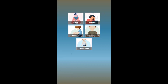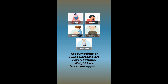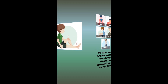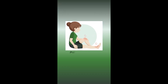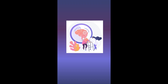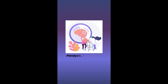The symptoms of Ewing sarcoma are fever, fatigue, weight loss, decreased appetite, and numbness. Additional symptoms include pain and swelling around the tumor, and paralysis if the tumor is in the spinal region.